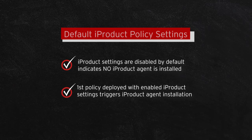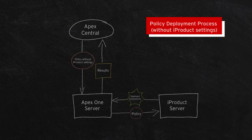Once the iProduct agents are installed, the policy setting changes to iProducts will simply fall back to the normal policy deployment flow. Now here's the policy deployment flow when there are no iProduct settings in the policy being deployed to the Apex One server.